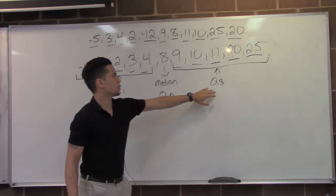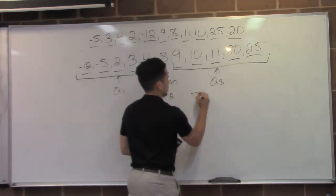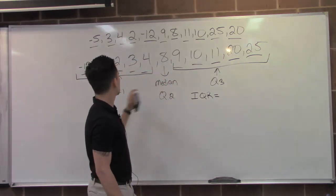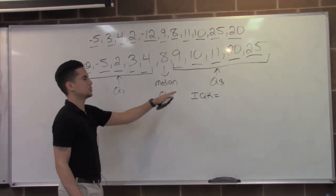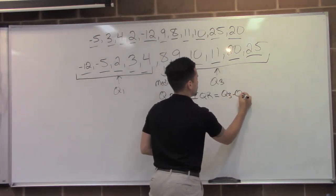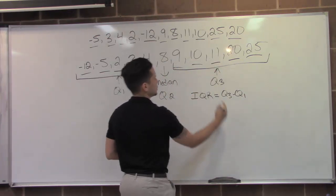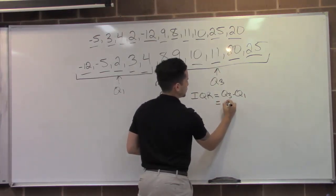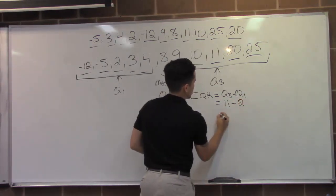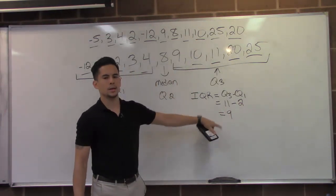So to find the interquartile range, we're going to use Q3 and Q1. And all we're going to do is subtract Q1 from Q3. So it's Q3 minus Q1. And so it's eleven, which is Q3 minus two, which is Q1. So our interquartile range is nine.